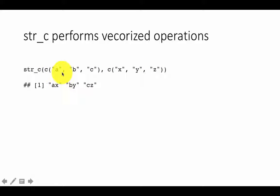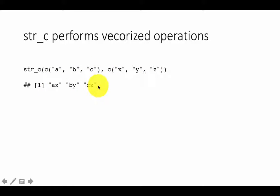The result is going to be just the result of the individual vectors, individual strings that were combined. So the result is three separate strings. It's not a vector — the result is just three individual strings given as output.